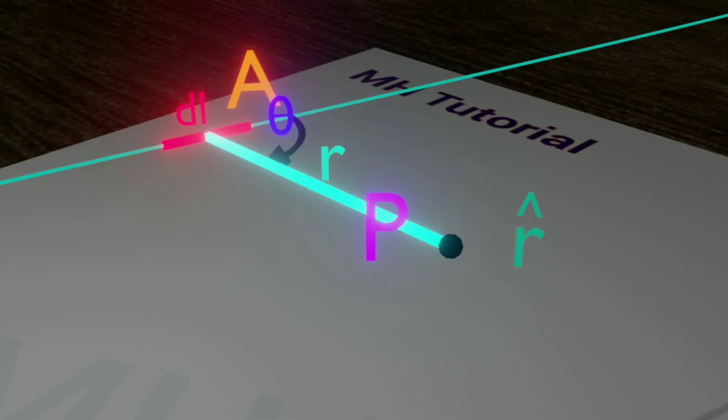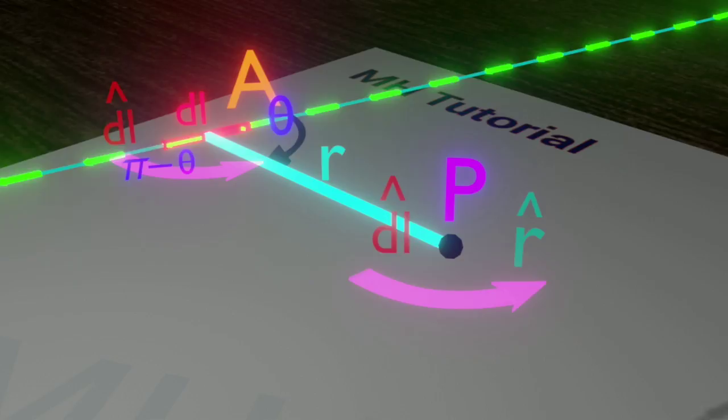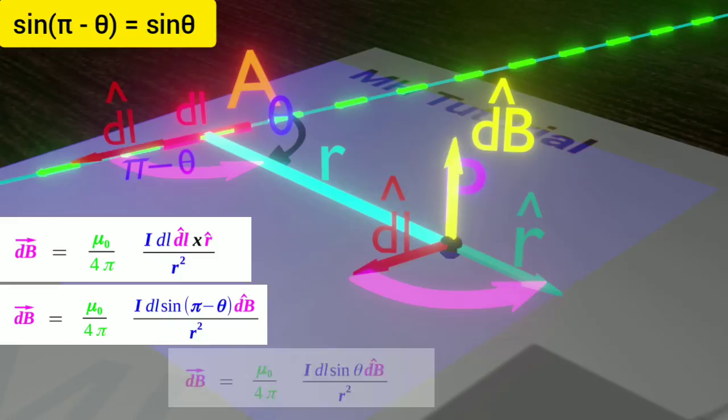Now let's change the direction of the electric current. In that case, the direction of DL will be opposite. And angle between them is pi minus theta. Multiplying cap DL cross cap R, we get sin pi minus theta into cap dB. Sine pi minus theta is equal to sin theta.